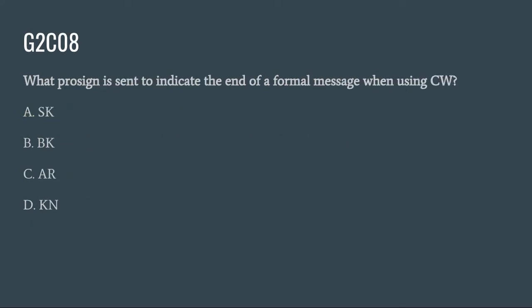G2C08: What prosign is sent to indicate the end of a formal message when using CW? A. SK. B. BK. C. AR. Or D. KN. The correct answer is C: AR.